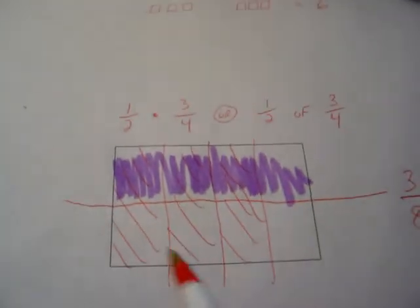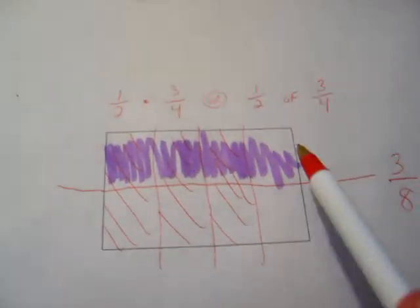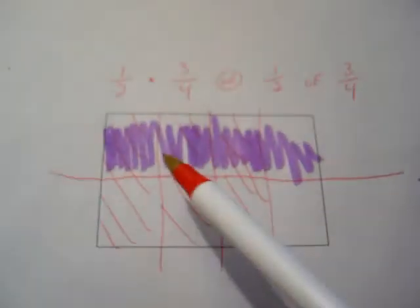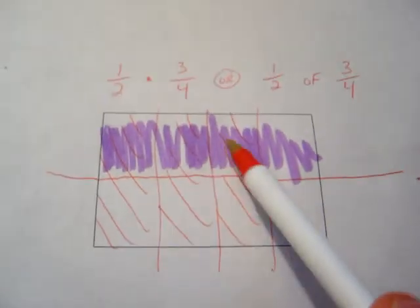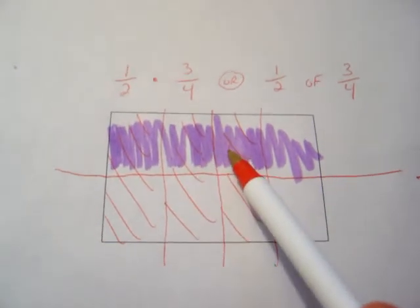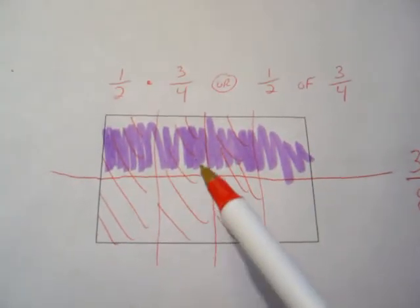You can see that we started with 3 fourths, which is a big chunk. Then we divide it in half, which is a very large chunk. And the answer is only 3 eighths, which is three of these little bitty rectangles. So when you multiply fractions, you're taking a piece of a piece.